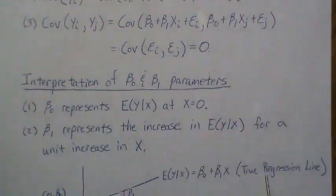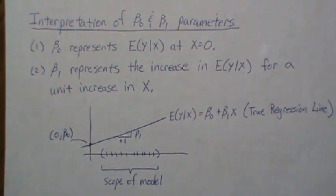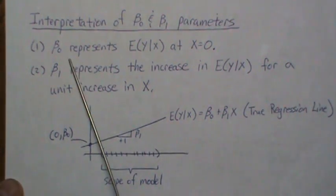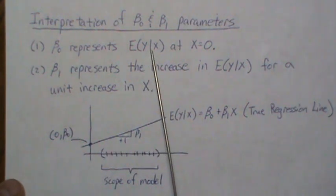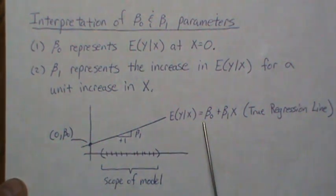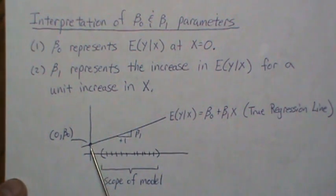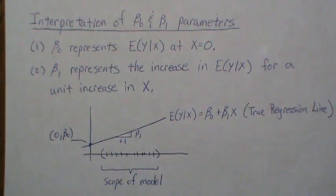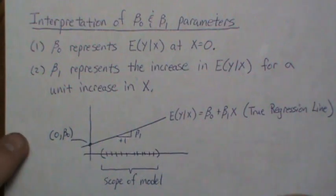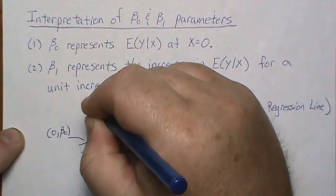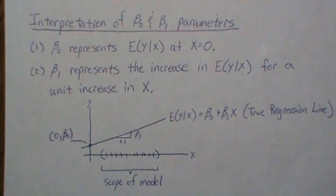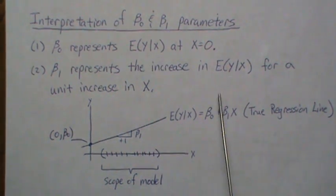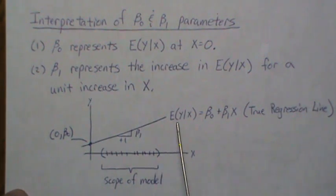The interpretation of the beta parameters: beta-0 represents the average y when x is zero — it's the y-intercept of the regression line. Beta-1 represents the increase in average y for a one-unit increase in x — so increasing x by one unit increases average y by beta-1 units.